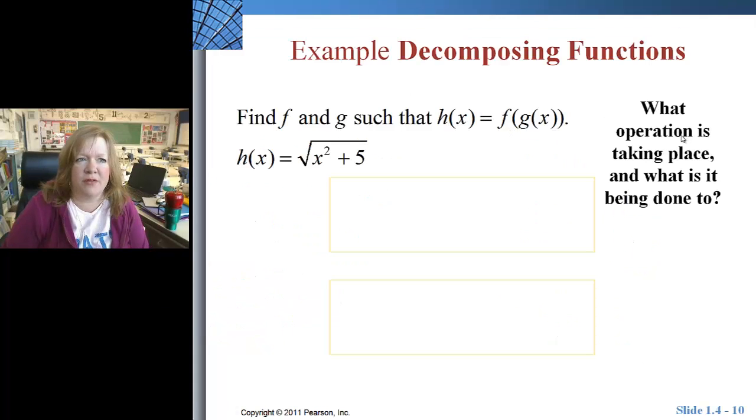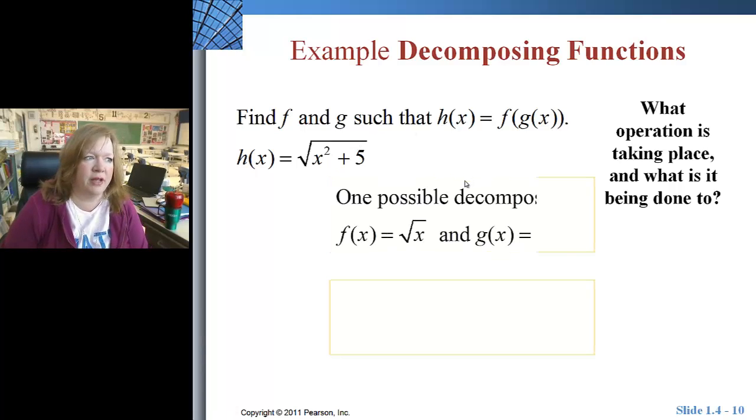What I ask myself is what operation is taking place and what is it being done to? So for example, this is the square root of. What comes after the of is what's going to be in your g of x. The square root function is going to be your f of x. So in other words,